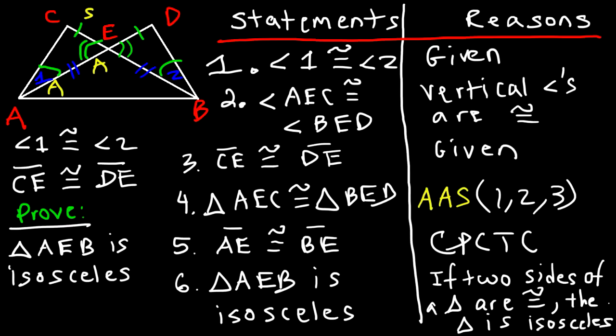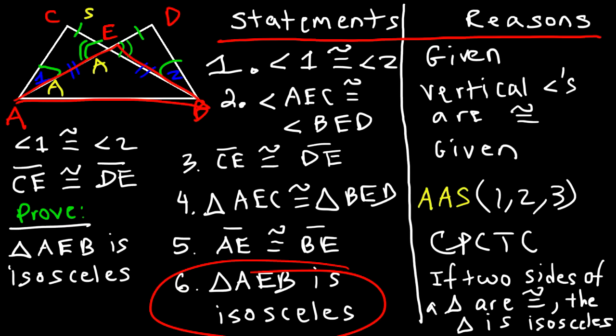And there you have it. These three examples show how to prove that a triangle is isosceles. Thanks for watching — and to clarify, we proved that one triangle is isosceles in each example, not two.